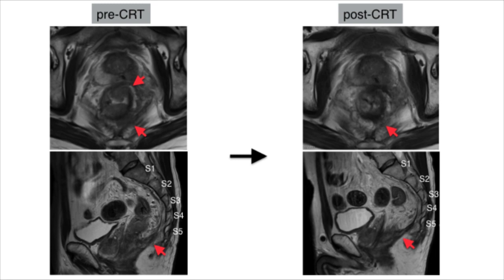We planned to perform a laparoscopic abdominal perineal resection with combined resection of the left side neurovascular bundle and the S5 sacrum.